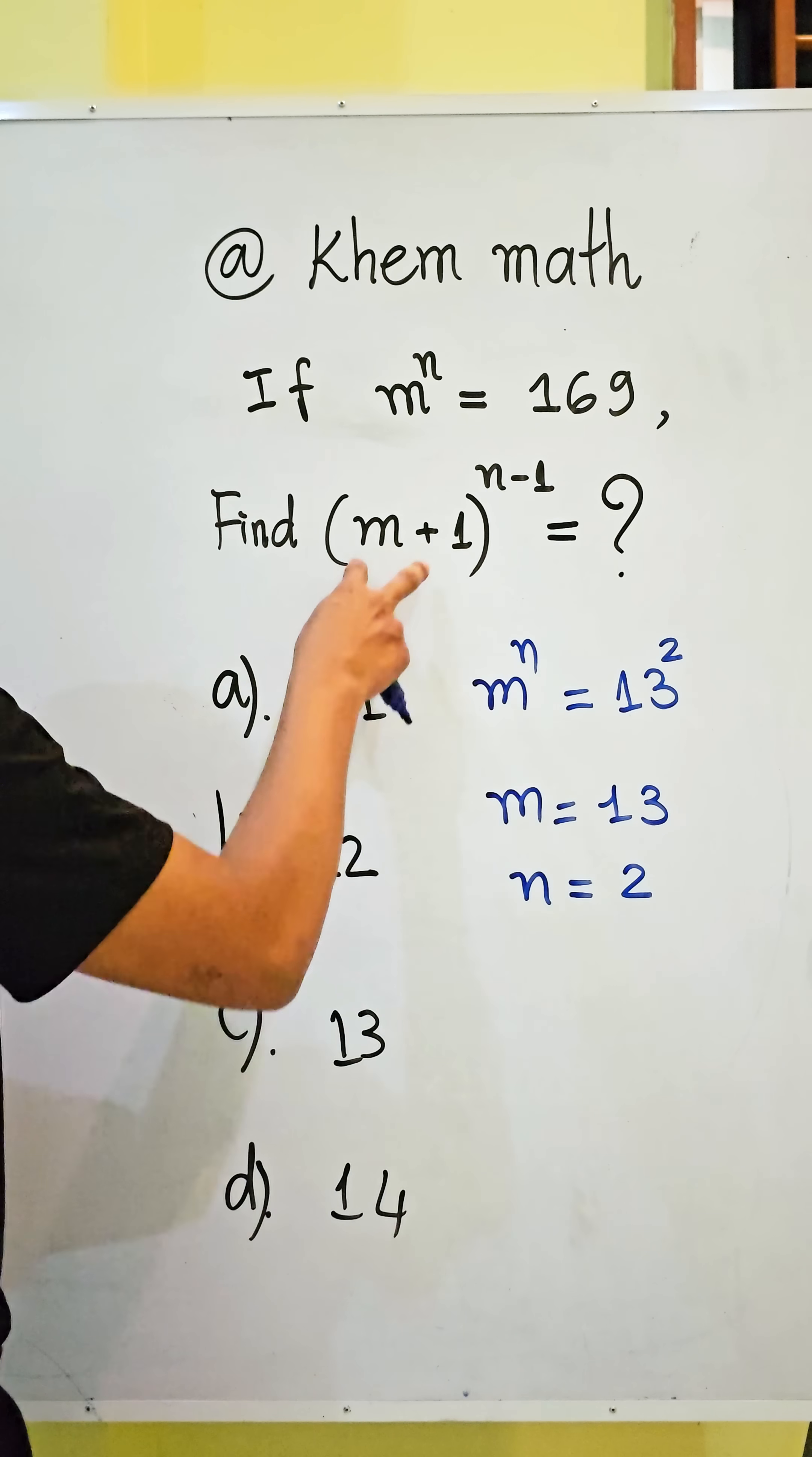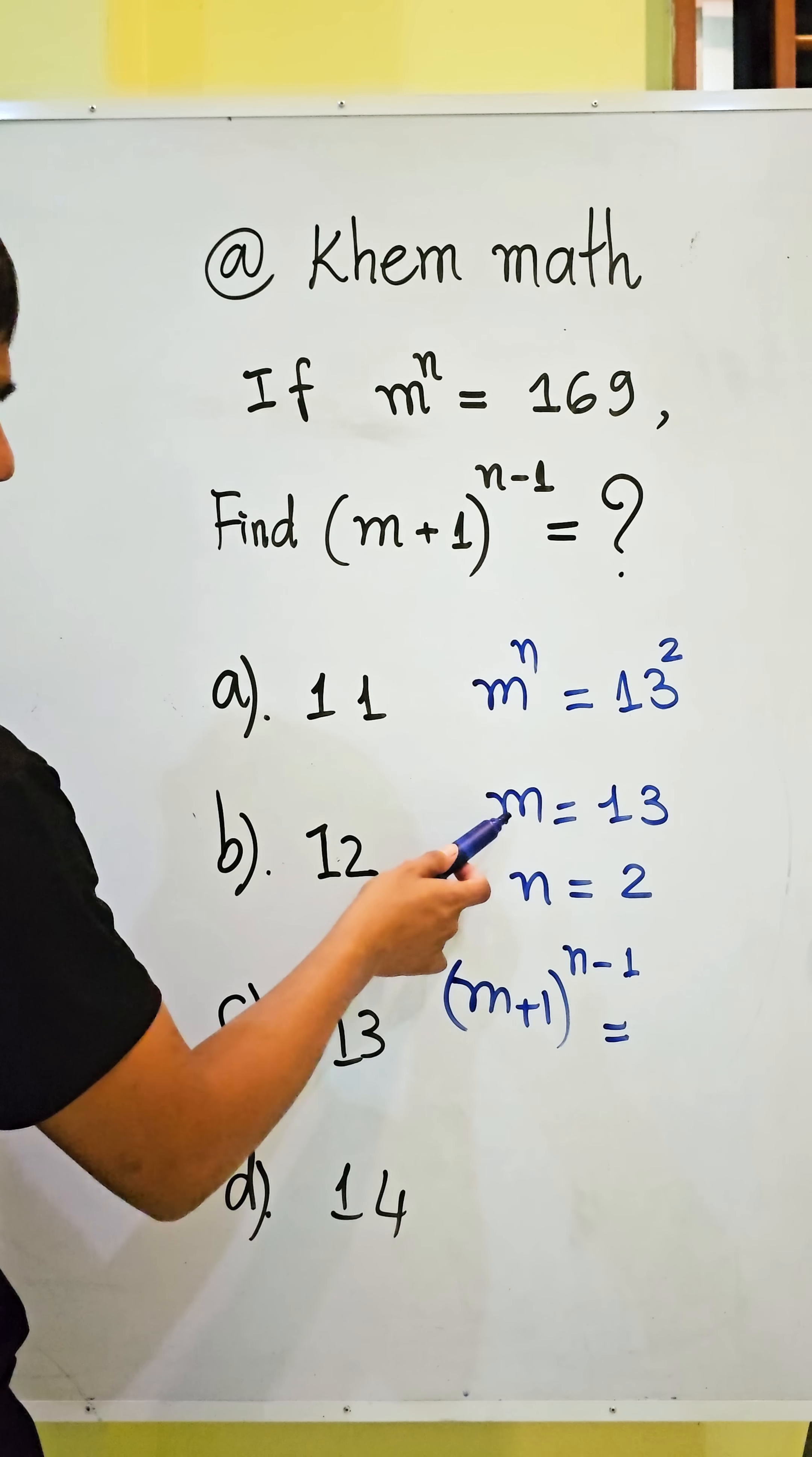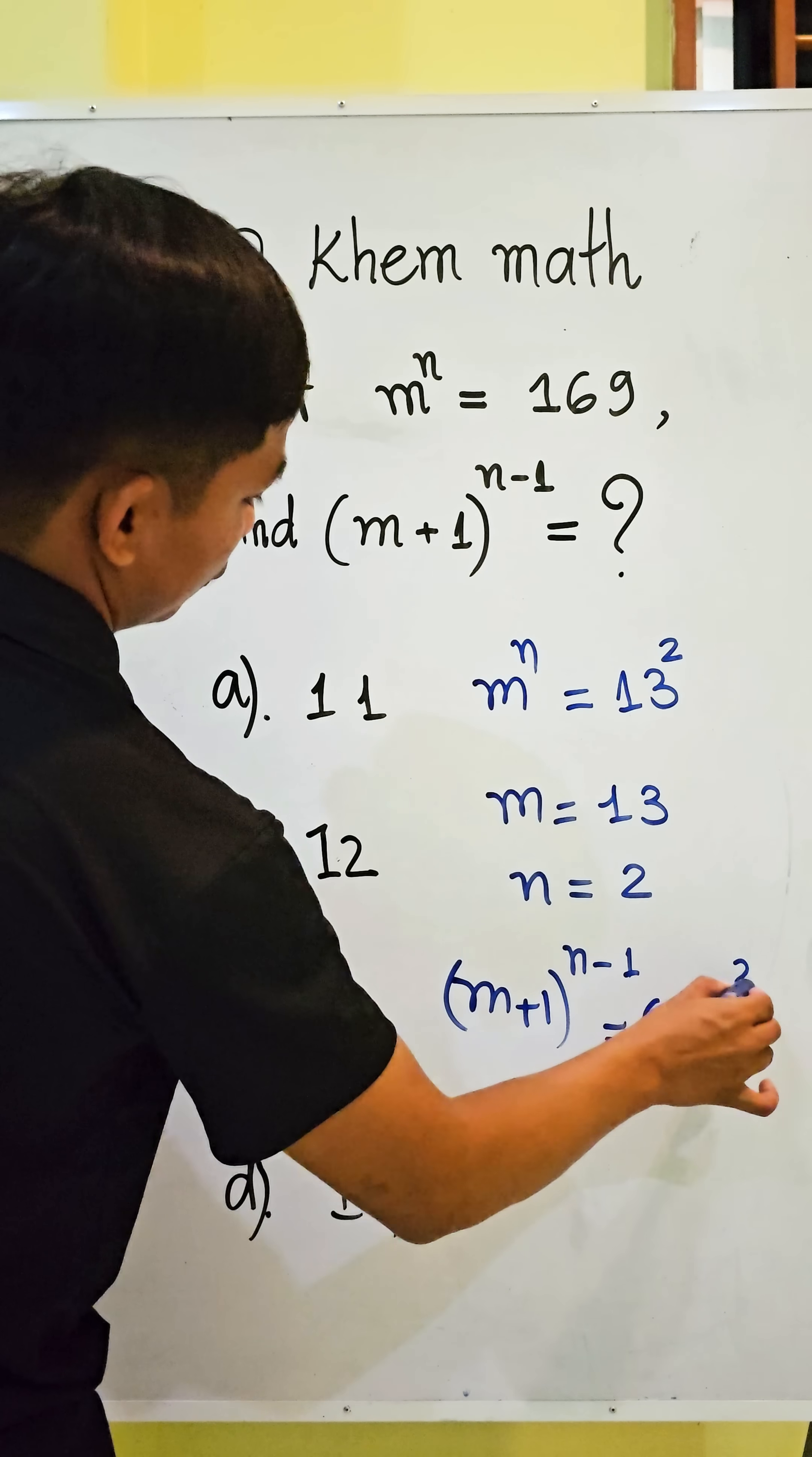So we get m plus 1 all power n minus 1 equal. Here we get m equal 13 plus 1, all power 2 minus 1.